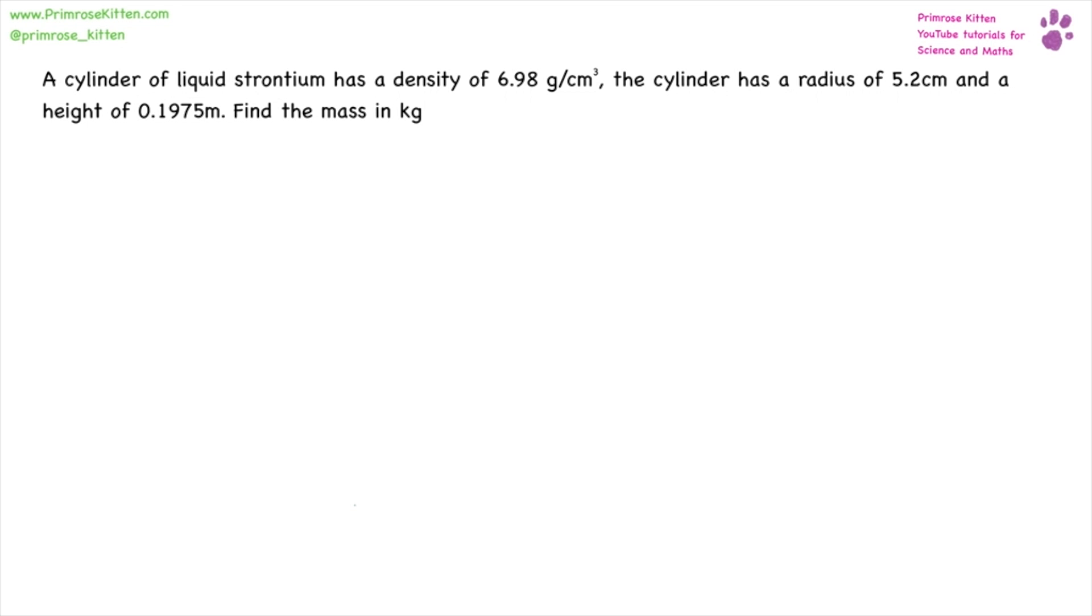A cylinder of liquid strontium has a density of 6.98 grams per centimeter cubed. The cylinder has a radius of 5.2 centimeters and a height of 0.1975 meters. Find the mass in kilograms. Now for this, we need a couple of formulas and you'll notice there are a couple of odd units in there.